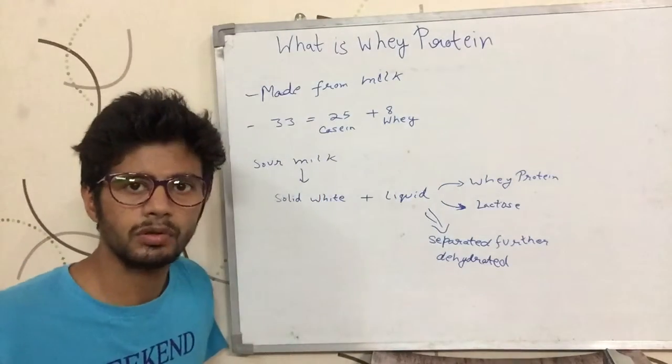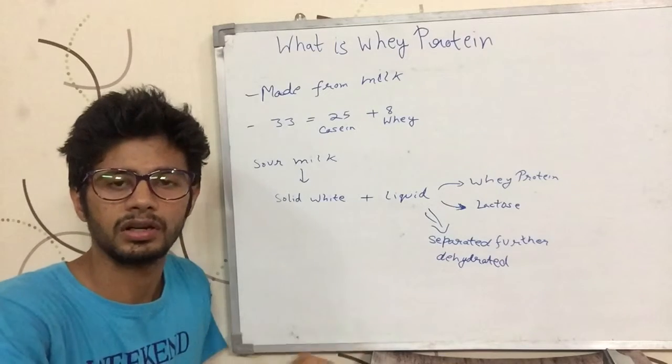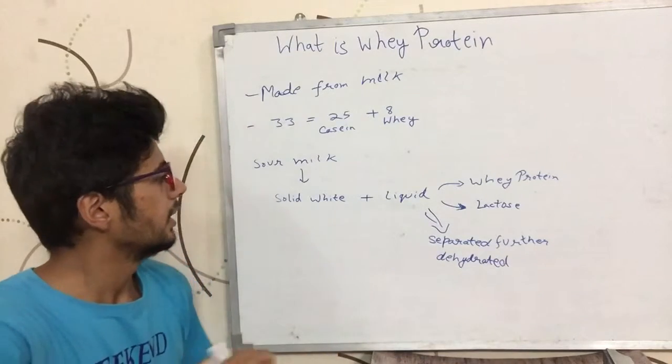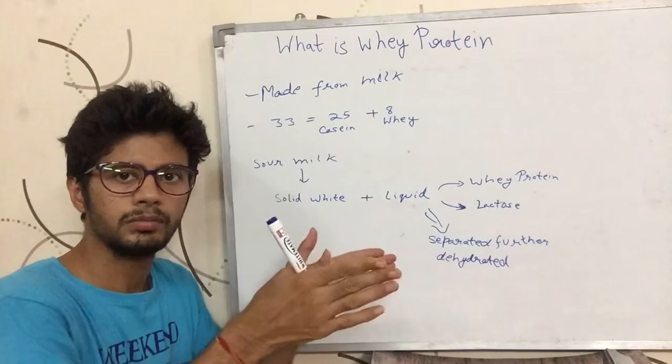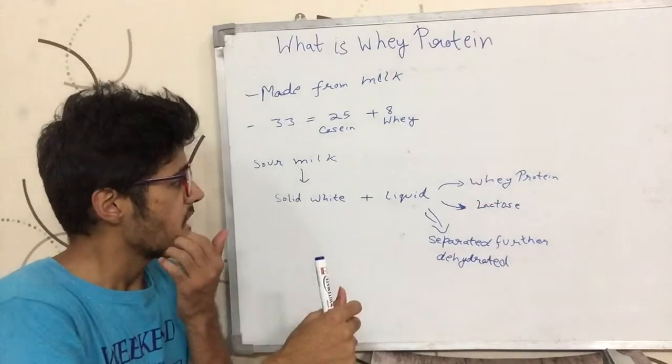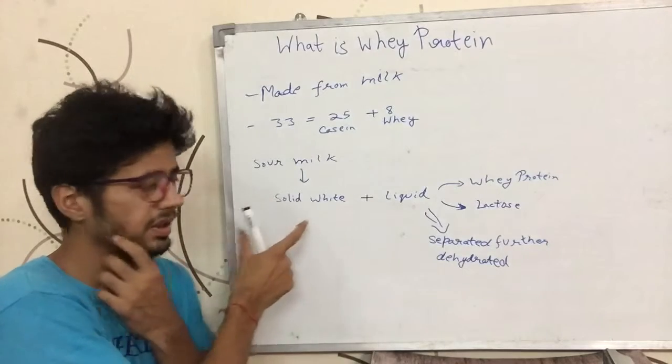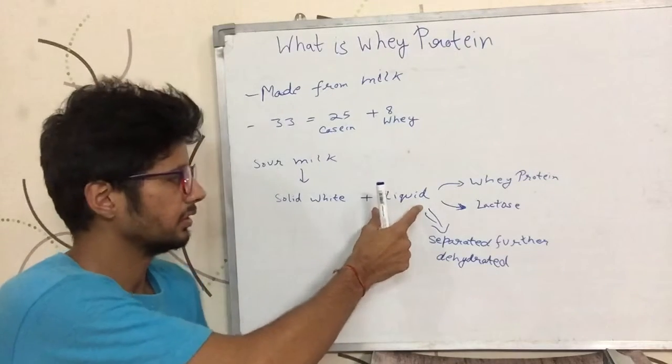Now, if you make sour milk by pouring lemon or curd in the milk, the liquid part of the milk and the solid part of the milk separates. The solid white part separates and then the leftover is the liquid part.